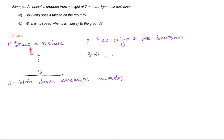Step five is to write down the kinematic variables. We use the variable y for position since the object is moving up and down. The acceleration is negative 9.8 meters per second squared — negative because I chose positive to be upwards and the object accelerates downwards. The initial velocity is zero, inferred from the object being dropped from rest. The initial position is zero because I chose my origin to be where the object was originally located.